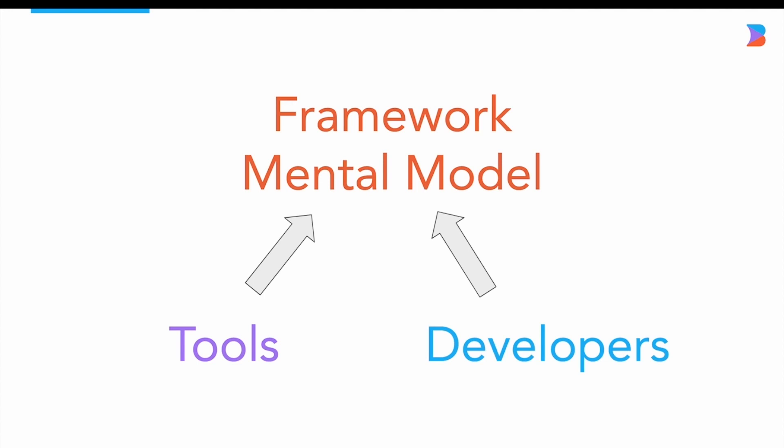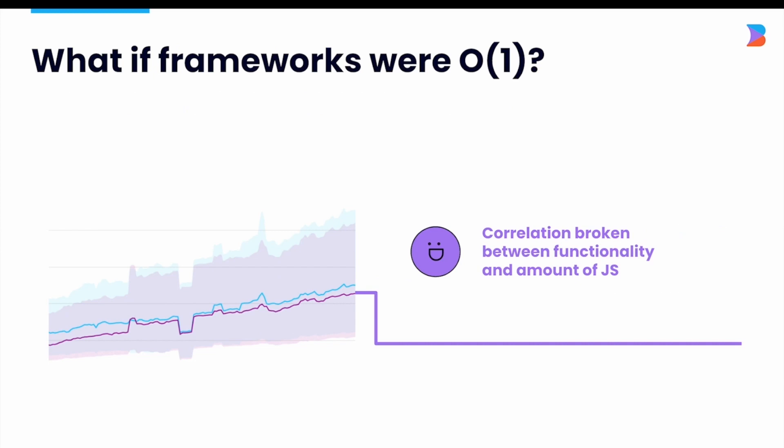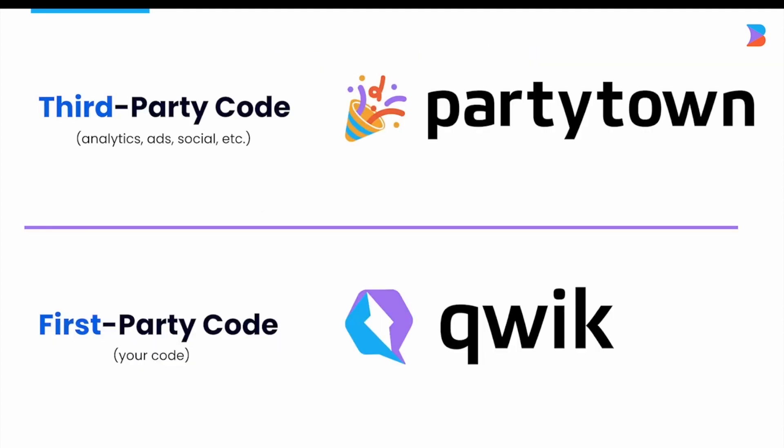But I'd like to wonder if it's not the developer, but rather the mental model which today's traditional frameworks are based on. The current trend is that added functionality means added JavaScript, and it doesn't seem to be slowing down. But what if we could break apart this correlation — what if no matter how much functionality you add, the startup cost and time to interactivity would stay the same?